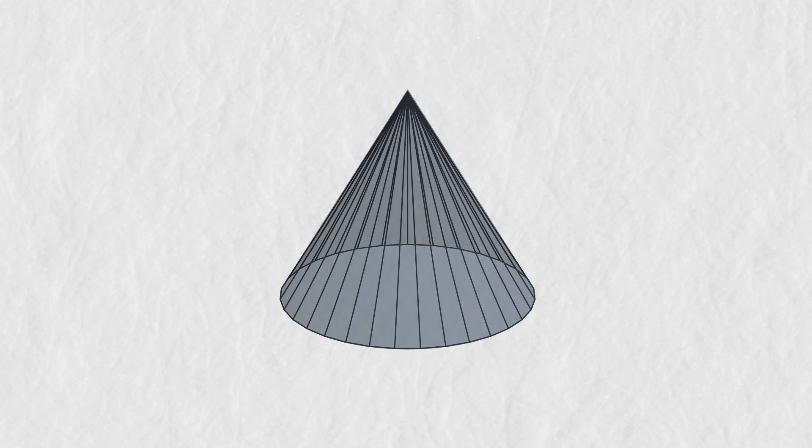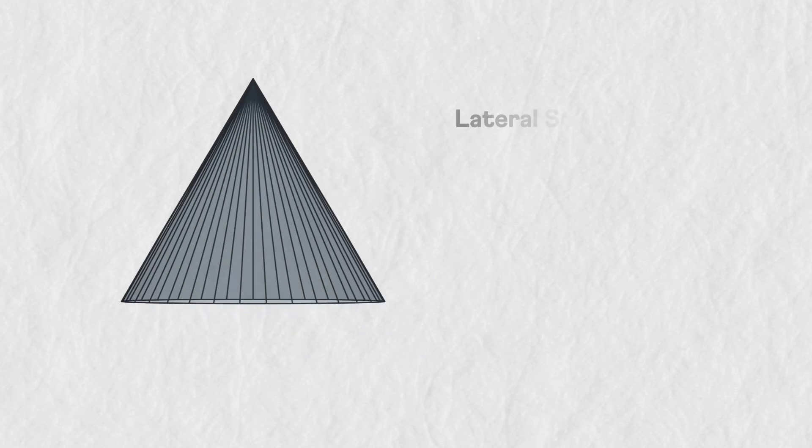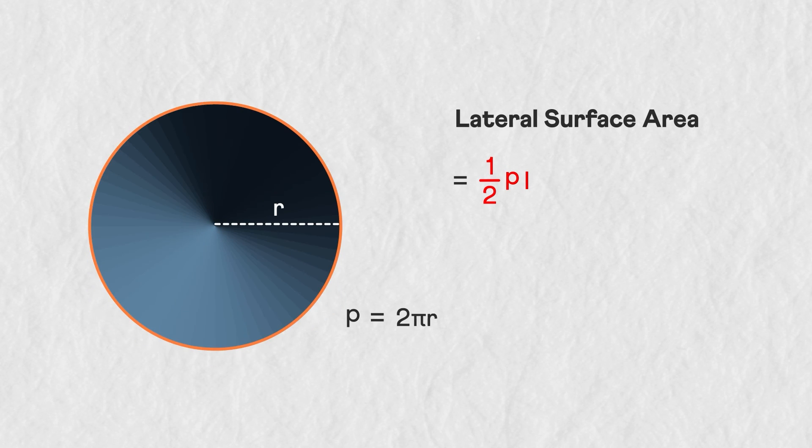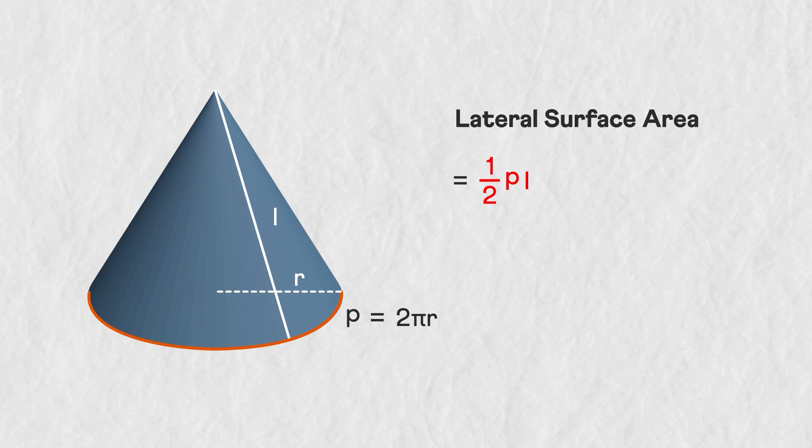We can apply the same formula to find its lateral surface area, that is half times the slant height times the perimeter of the base. The perimeter of its base is equal to the circumference of the circle. So the lateral surface area of the cone must be half times 2πr times l, that is πrl.